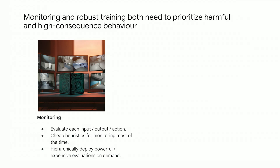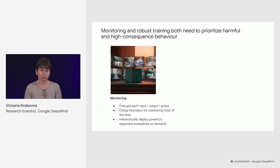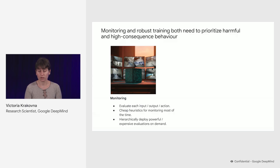In monitoring, what we want to do is evaluate each input-output action event that actually happens in the deployed system. While we can't evaluate everything that could happen, it might actually be feasible to evaluate everything that does happen, because only a finite number of things actually happen. What we need to make this work is cheap heuristics for monitoring most of the time, because most events are not particularly concerning or important. We then want to hierarchically deploy more powerful or expensive evaluations on demand — most of the time we'll only be using very cheap scans to check the outputs of our models.